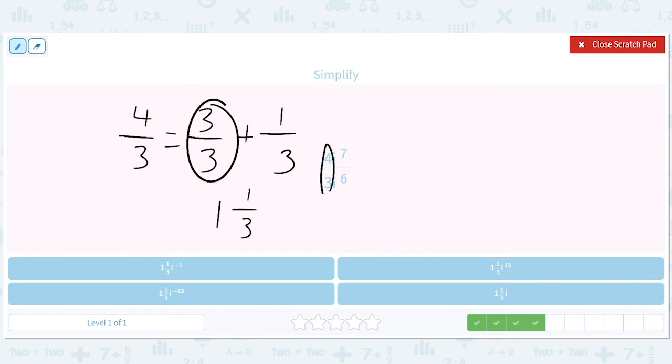I'm getting better at writing on these screens, kids. So it's getting fun. This is i to the 7. Handwriting used to be way worse. Minus 6. So this is i to the 1, or just i. So we have 1 and 1 thirds, i.